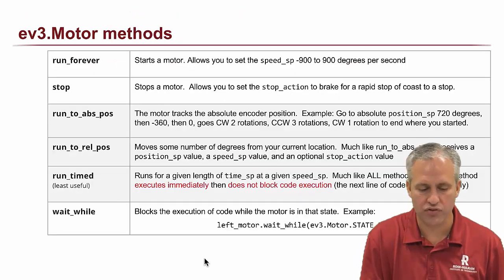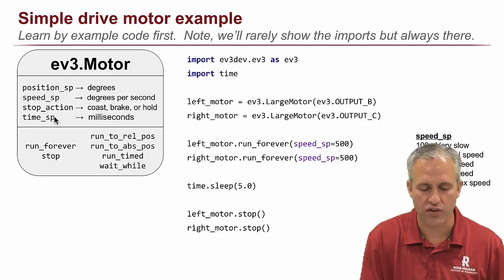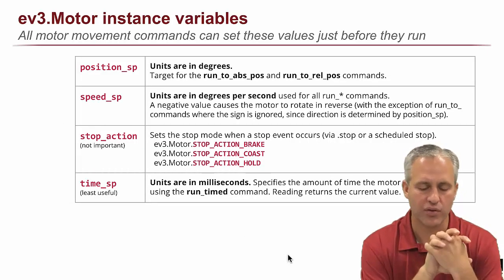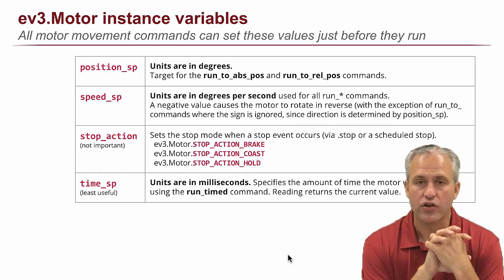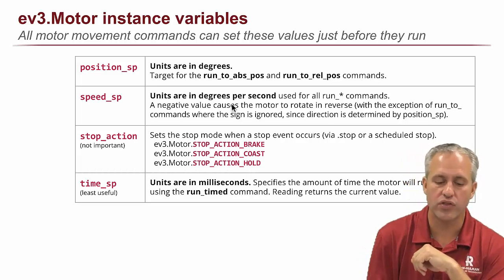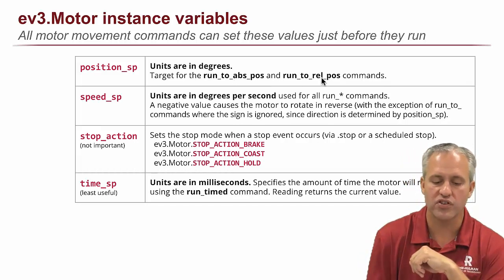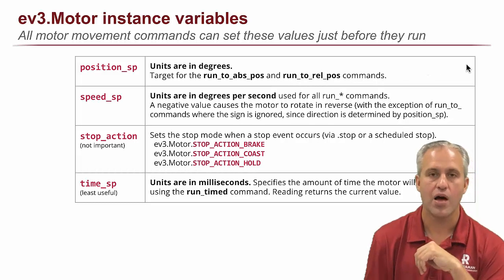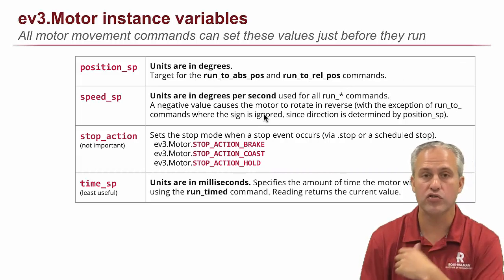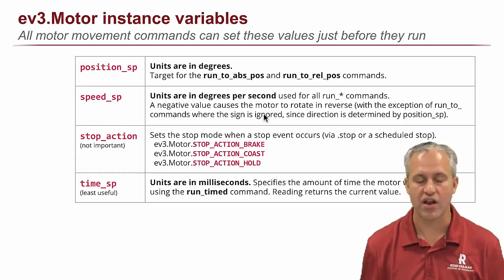The instance variables, so we've got this UML thing. We've got four instance variables here. Position_sp, I think it stands for scaled or something like that. The units are in degrees, and this is a target position. You really only use this with the commands run to ABS position and run to rel position. It's you're setting the target that you're trying to go to.